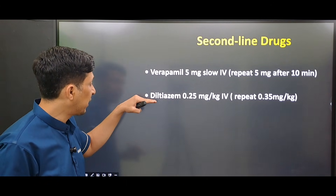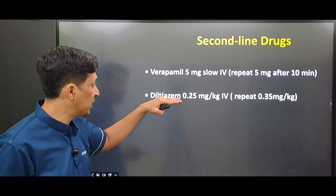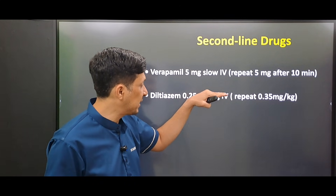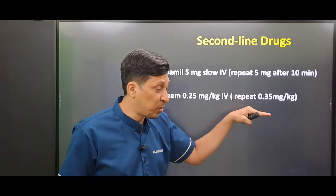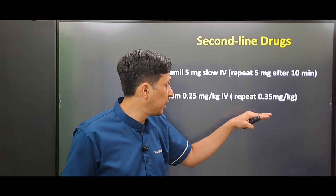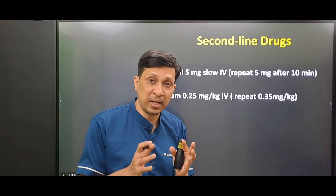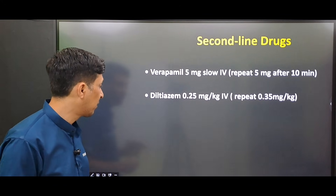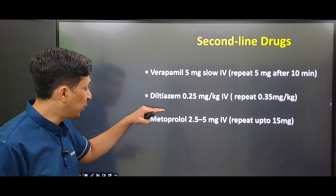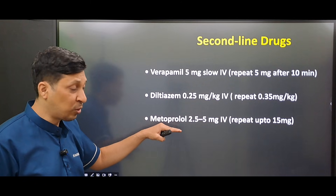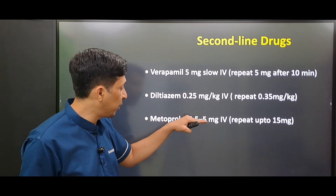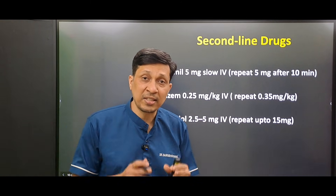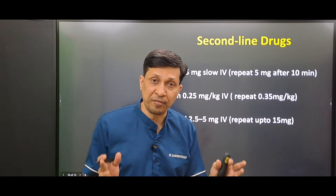We can also give diltiazem — the dose is 0.25 mg/kg IV, and if there is no response you can repeat with 0.35 mg/kg IV. You can also use metoprolol — the dose is 2.5 to 5 mg IV and you can repeat this up to a total of 15 mg.